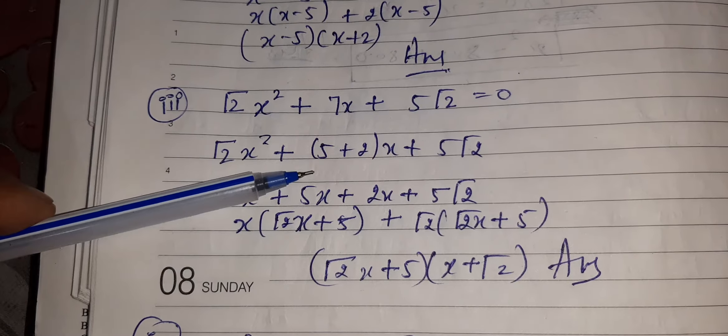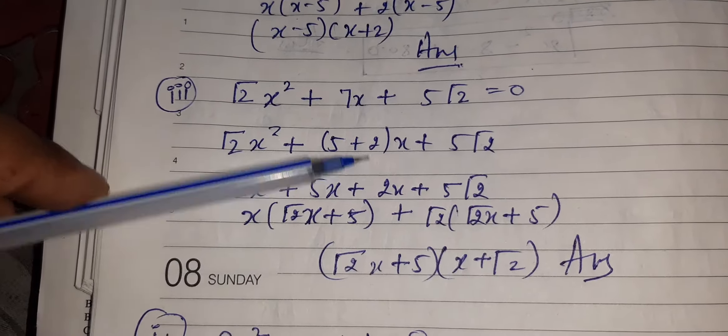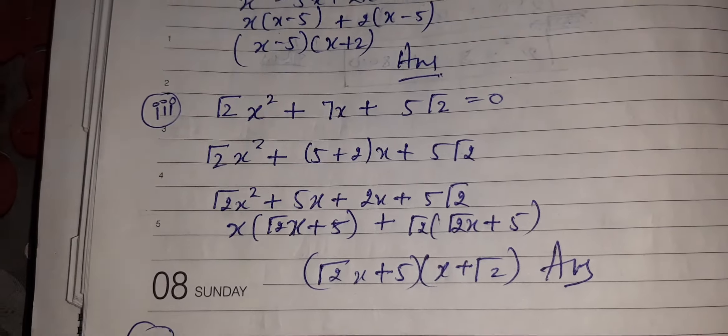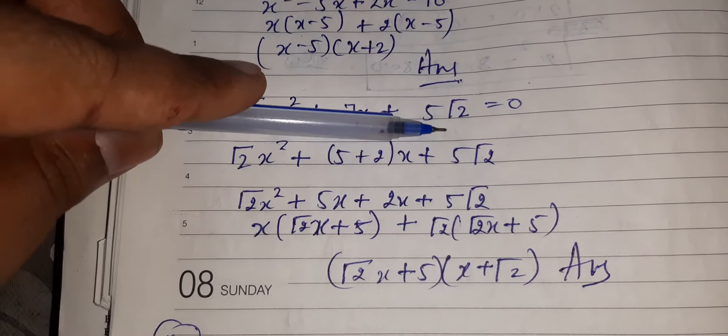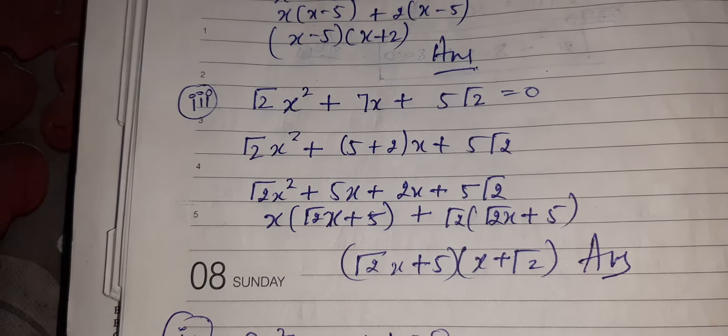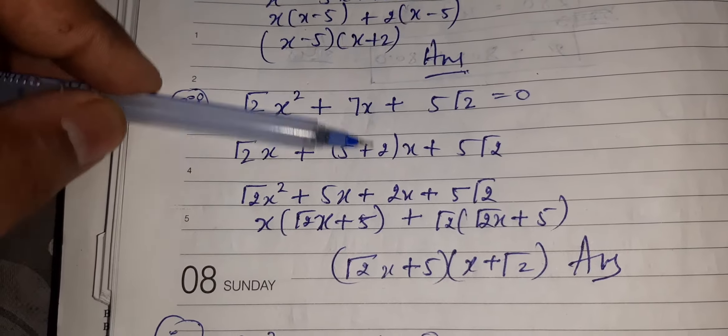I have to break 7 into two parts, that is 5 plus 2. When you multiply √2 into 5√2, it will get 5 times 2 which is 10 only. 5 times 2 is 10, 5 plus 2 is 7.